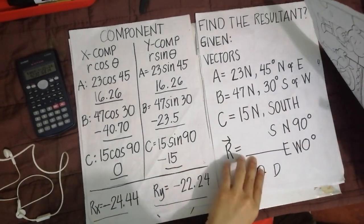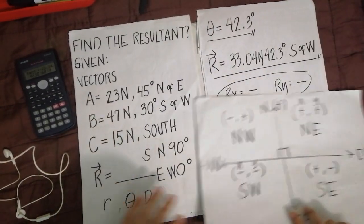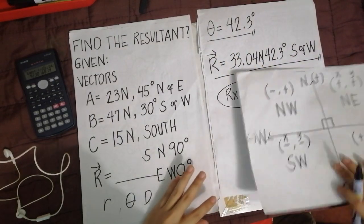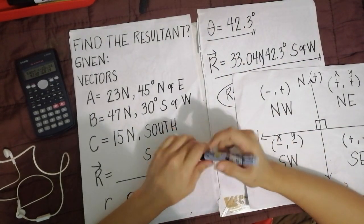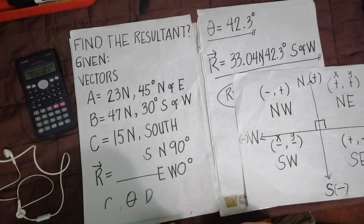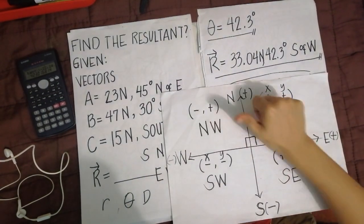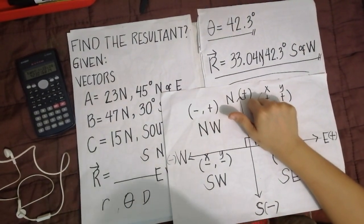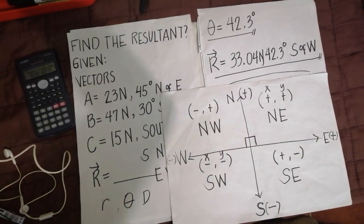So, ito na yung final answer natin. Ito. This is what we call the component method. Getting the resultant vector. So, that's it. Thank you. Take care.